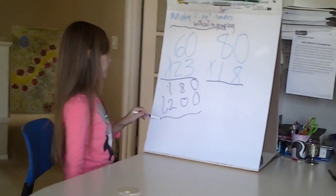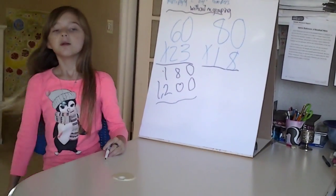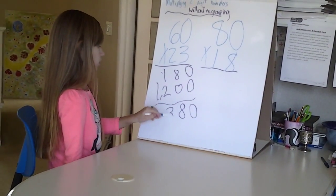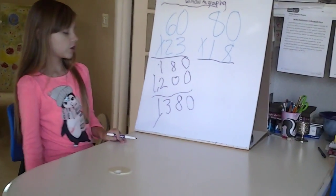Add those two numbers together, 180 plus 1200, which is 1380.